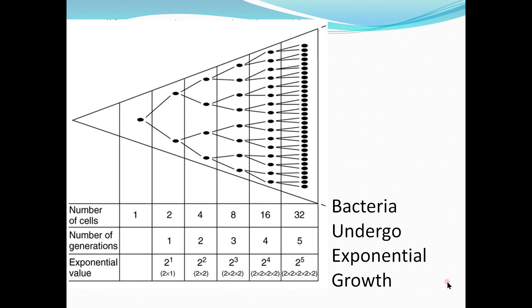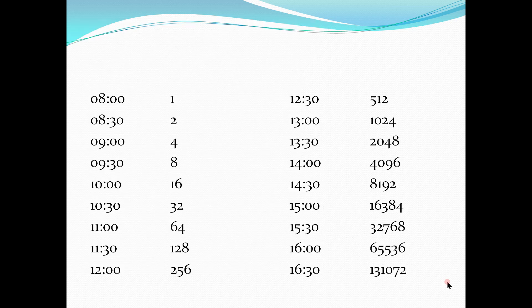This is why it's known as exponential growth: two to the exponent one is two, two to the exponent two is four, two to the exponent three is eight, two to the exponent four is 16, and so on. The rate of bacterial growth is in the form of a logarithmic or exponential function. For example, if we have one bacterium at 8 a.m. with a doubling time of 30 minutes...